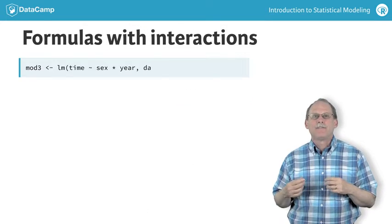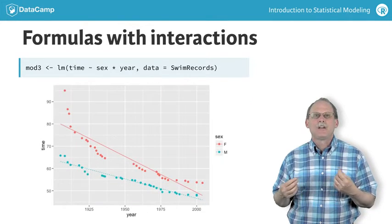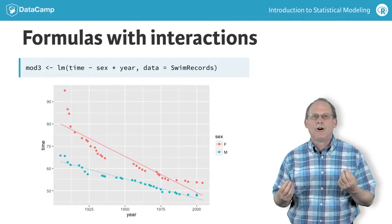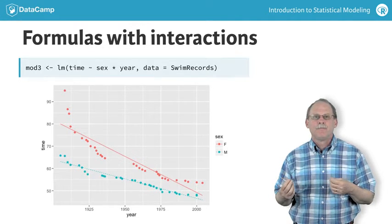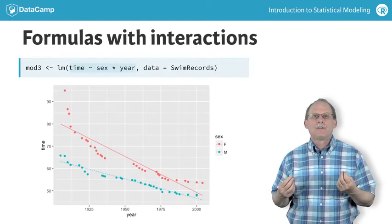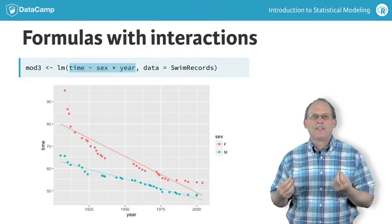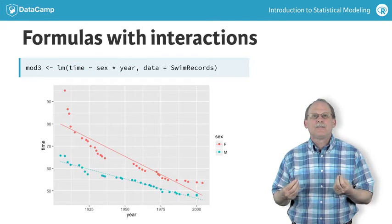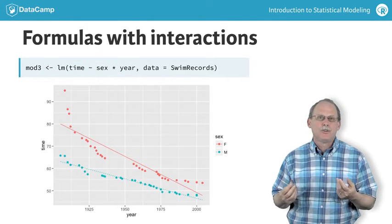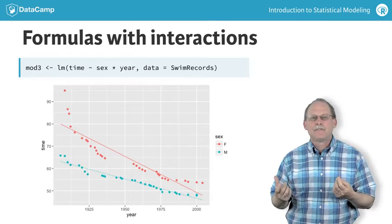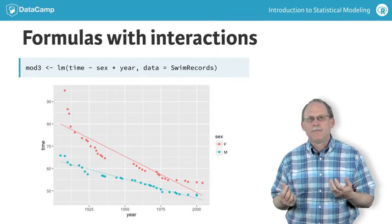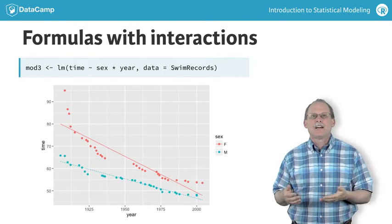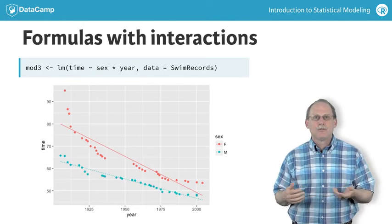You ask for an interaction effect to be included by using a model formula with a star to connect the variables you want to involve in the interaction. So here, the model formula says sex star year rather than sex plus year. You can see the interaction in the graph in two ways. The effect size of sex decreases with year. And equivalently, the slope giving the effect size with year is different for the two sexes.